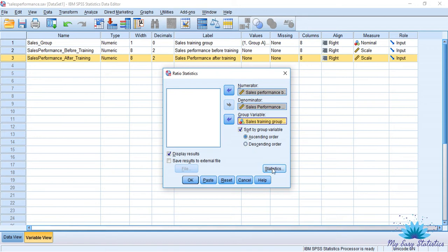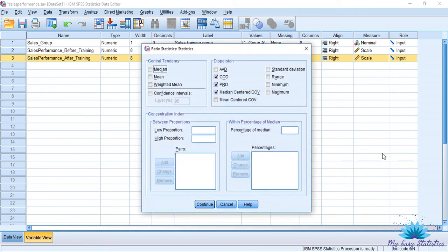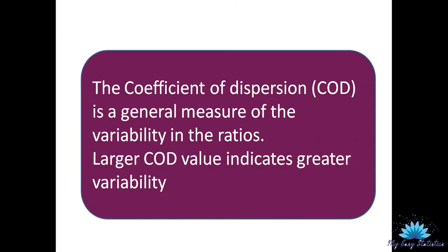Now let me click the button Statistics. I am going to set Central Tendency as Median. For Dispersion, I want to keep only COD. COD stands for Coefficient of Dispersion. The Coefficient of Dispersion is a general measure of the variability in the ratios. A large COD value indicates greater variability. Among the three groups — Group A, Group B, Group C — whichever group has the higher COD value has more variability between the scale variables.